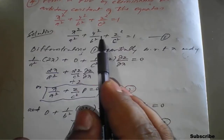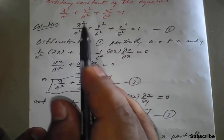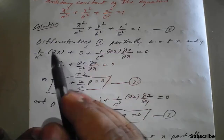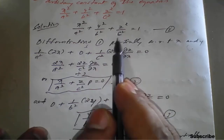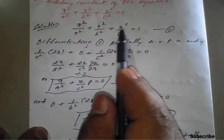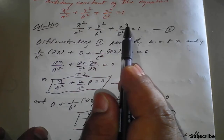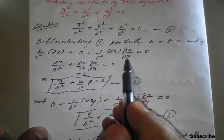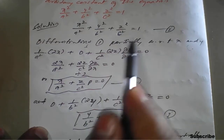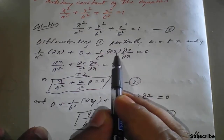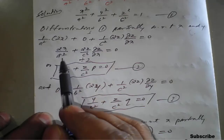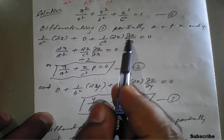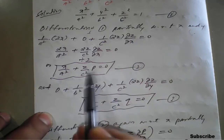Differentiating with respect to x: 1/a² times 2x, the y²/b² term is purely constant with respect to x so gives 0, and the partial derivative of z²/c² with respect to x gives (1/c²) · 2z · ∂z/∂x. Setting this equal to 0 and simplifying, we get x/a² + (z/c²) · ∂z/∂x = 0, where ∂z/∂x is denoted p. This is equation 2.